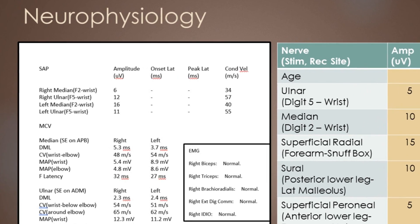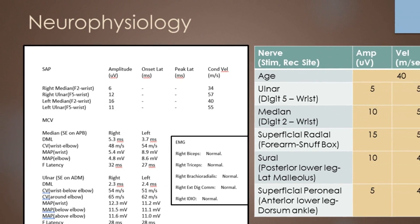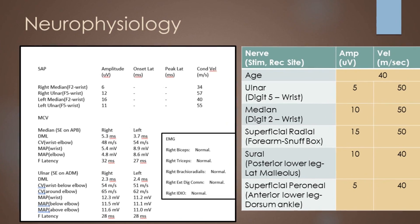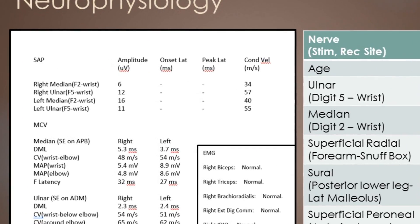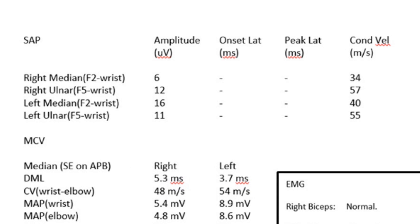Let's first have a look at the sensory responses. We can see over here that the amplitude is 6 microvolts and the velocity is 34 metres per second — so the amplitude is both reduced and the velocity is slow. We would have expected it to have been 10 microvolts and 50 metres per second, so it's both small and slow.